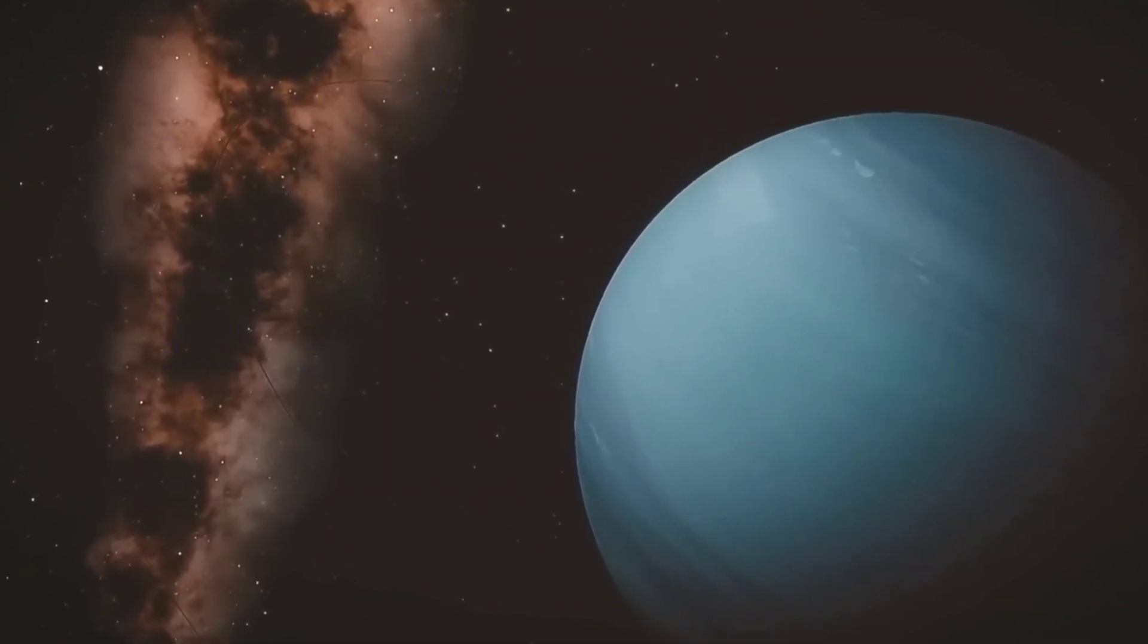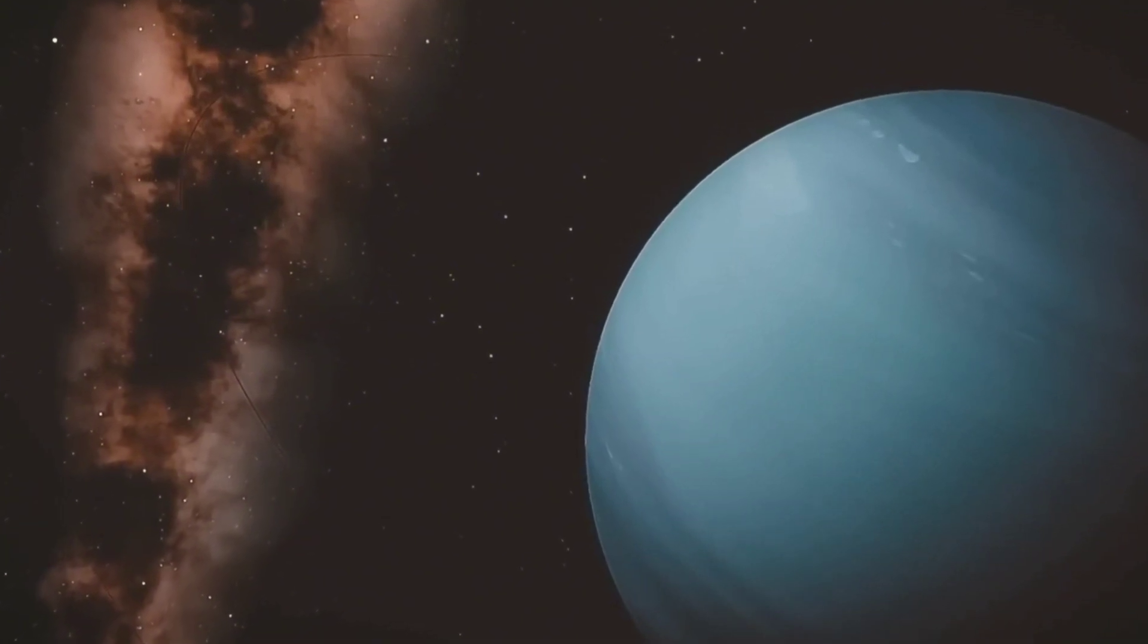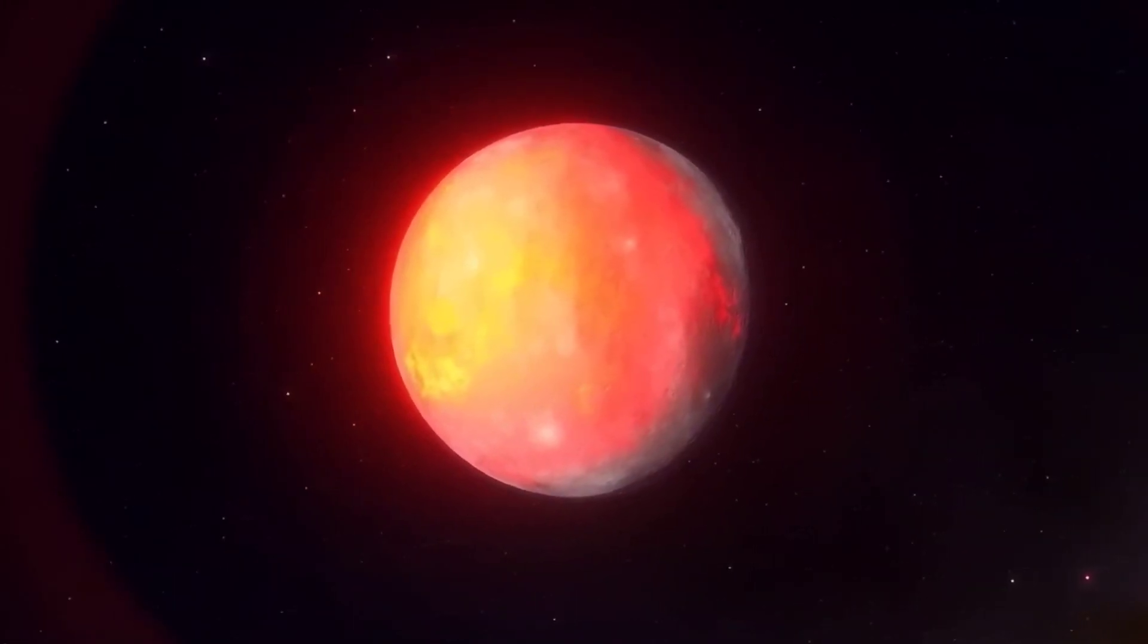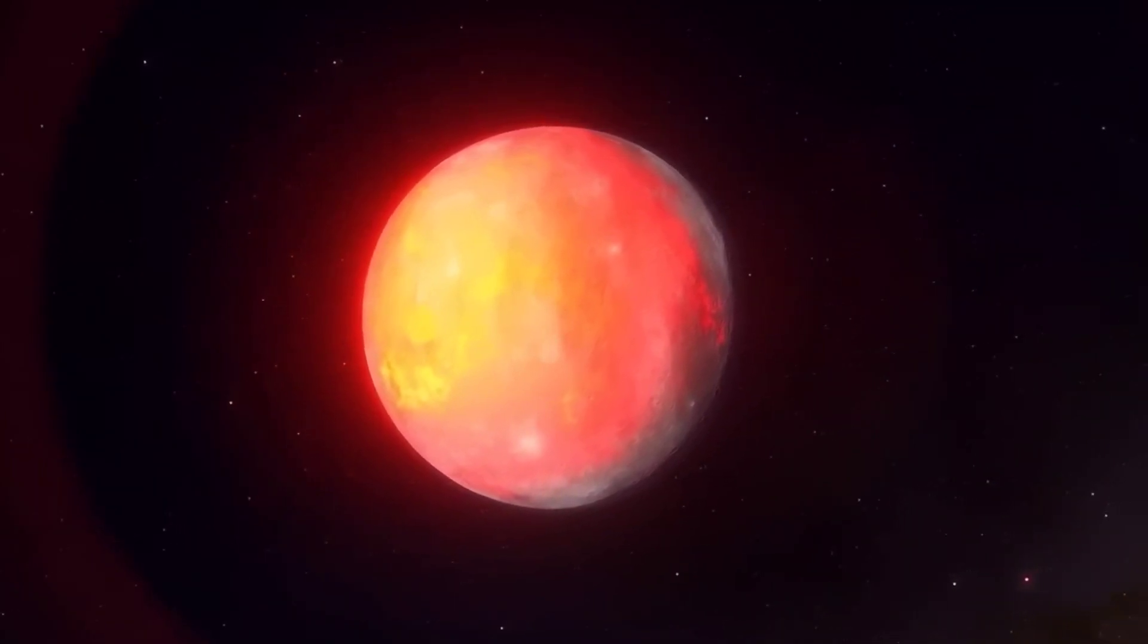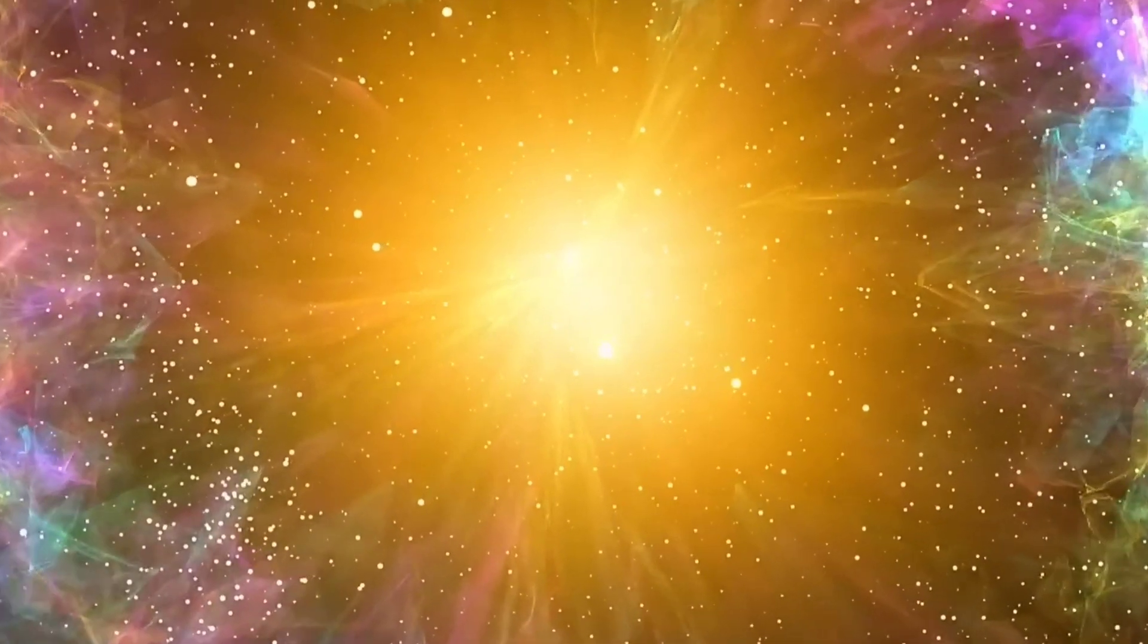Despite its brightness, the supernova will not pose any threat to Earth. Betelgeuse is located 430 to 724 light-years away from Earth, and this distance prevents the supernova explosion from being a threat to our planet.